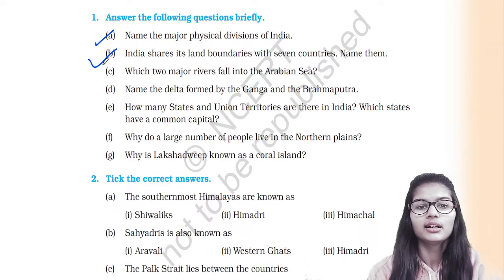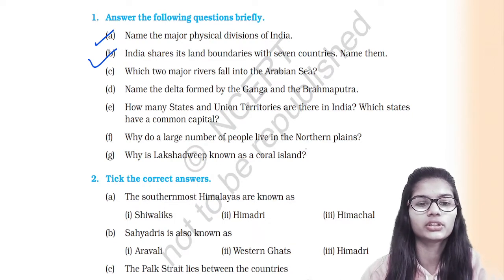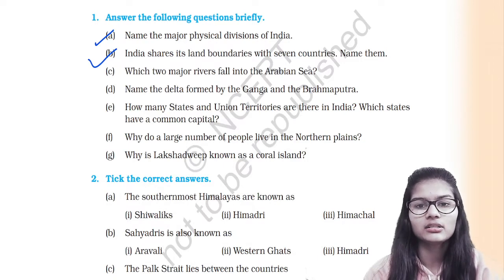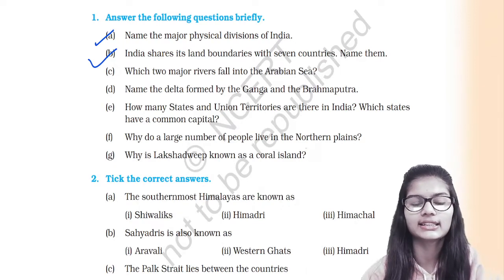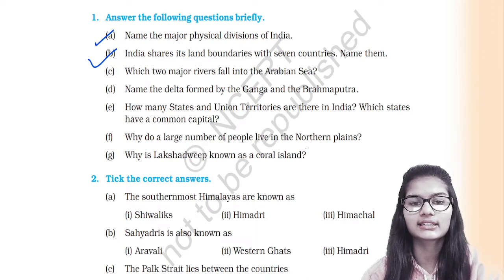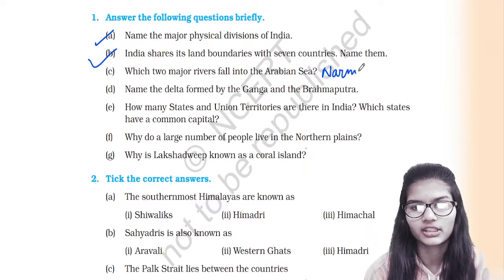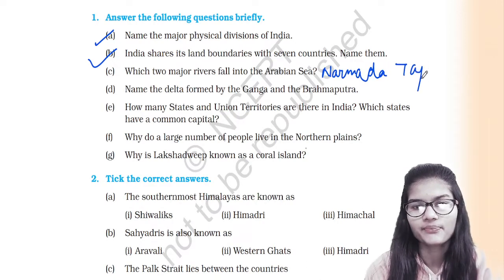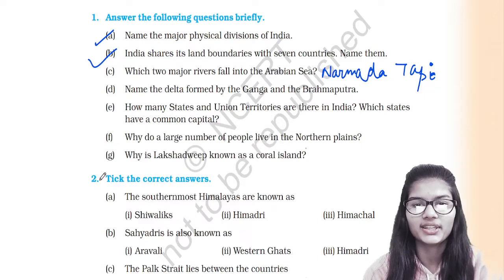Question 3: which two major rivers fall into the Arabian Sea? There are only two rivers that drain into the Arabian Sea — rivers flowing in the east direction drain into the Indian Ocean. The two rivers that drain into the Arabian Sea, flowing westward, are Narmada and Tapi.